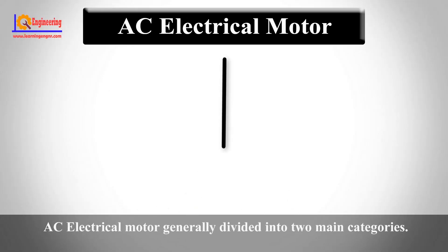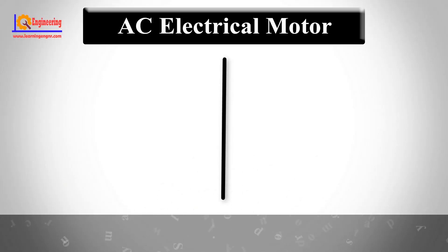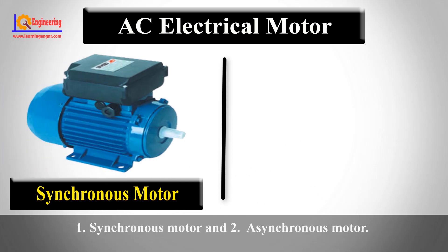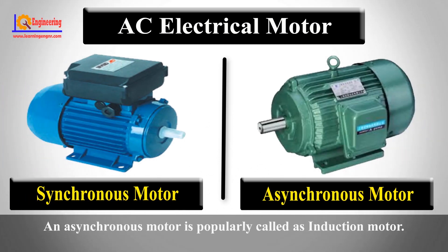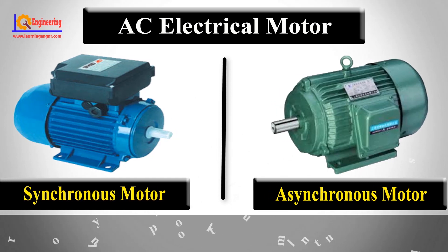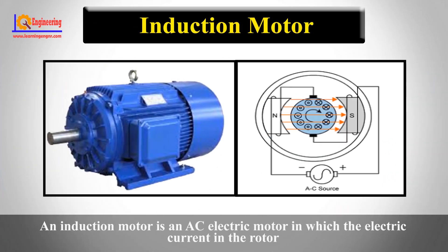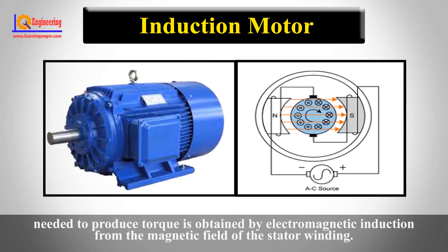AC electrical motors are generally divided into two main categories: synchronous motors and asynchronous motors. An asynchronous motor is popularly called an induction motor. An induction motor is an AC electric motor in which the electric current in the rotor needed to produce torque is obtained by electromagnetic induction from the magnetic field of the stator winding.